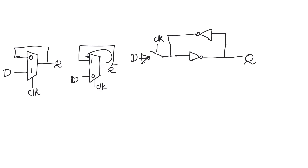There's a problem when we are in transparent mode, because when we are in transparent mode, the node Q bar is being written to by two inverters: the one that is trying to write the new value of D, and the one that is trying to keep the old value of Q through the positive feedback. So there is a contention on node Q bar, and we need to disconnect this contention.